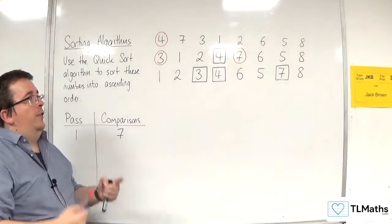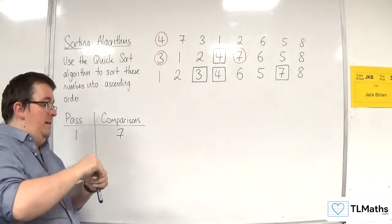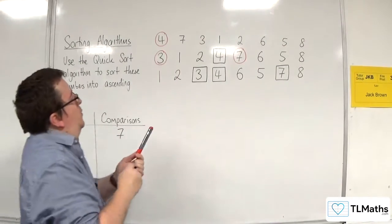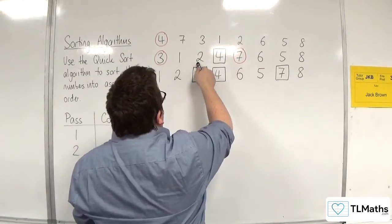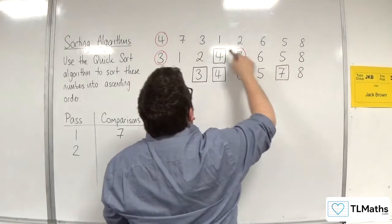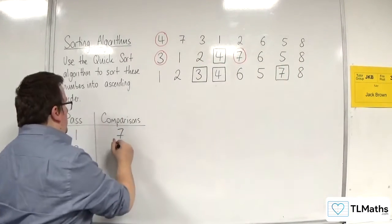Right. That was the second pass. I should count the number of comparisons. So we compared three with one and two, and we compared seven with six, five, and eight. So five comparisons were made.